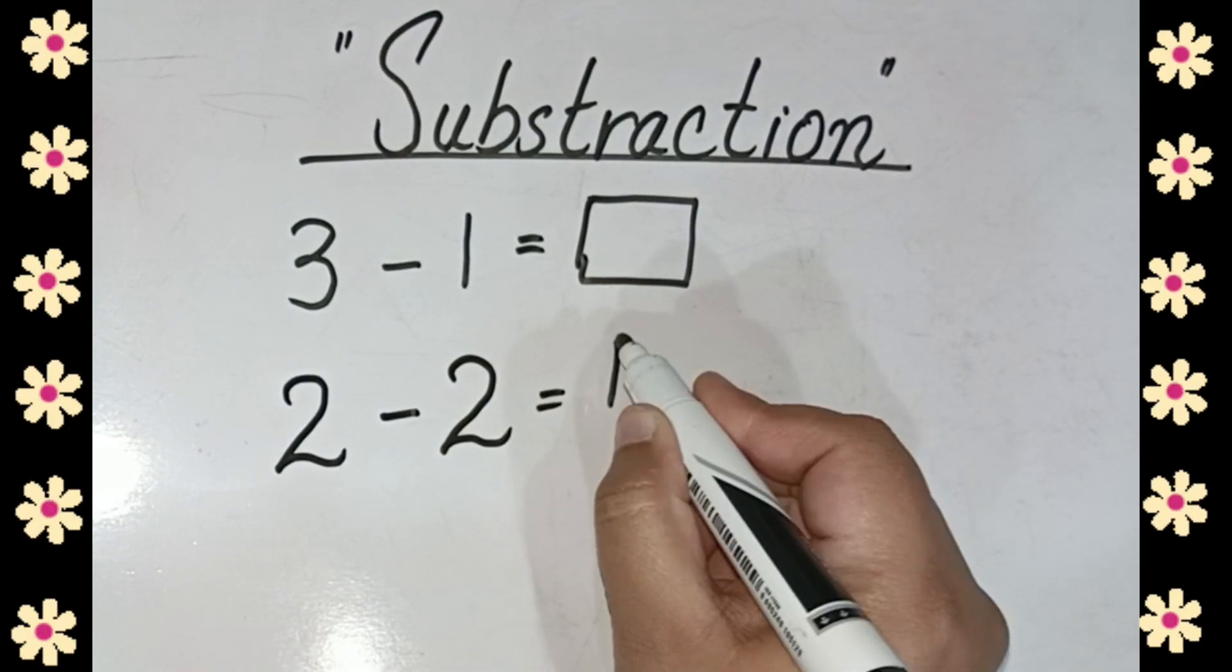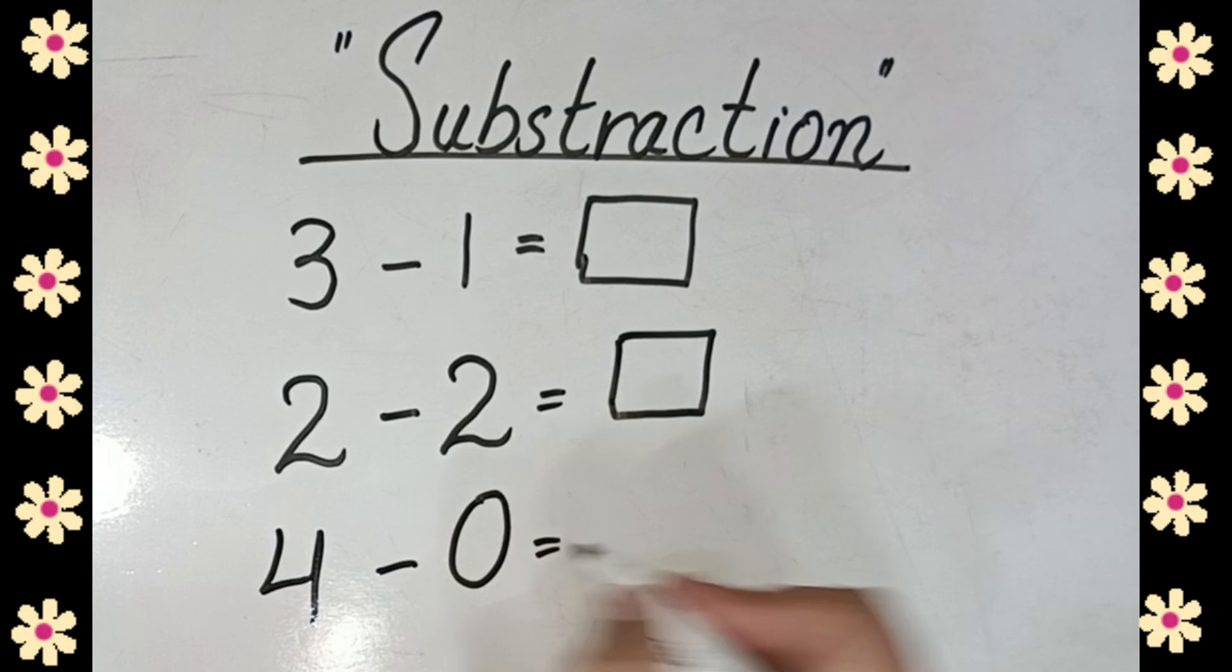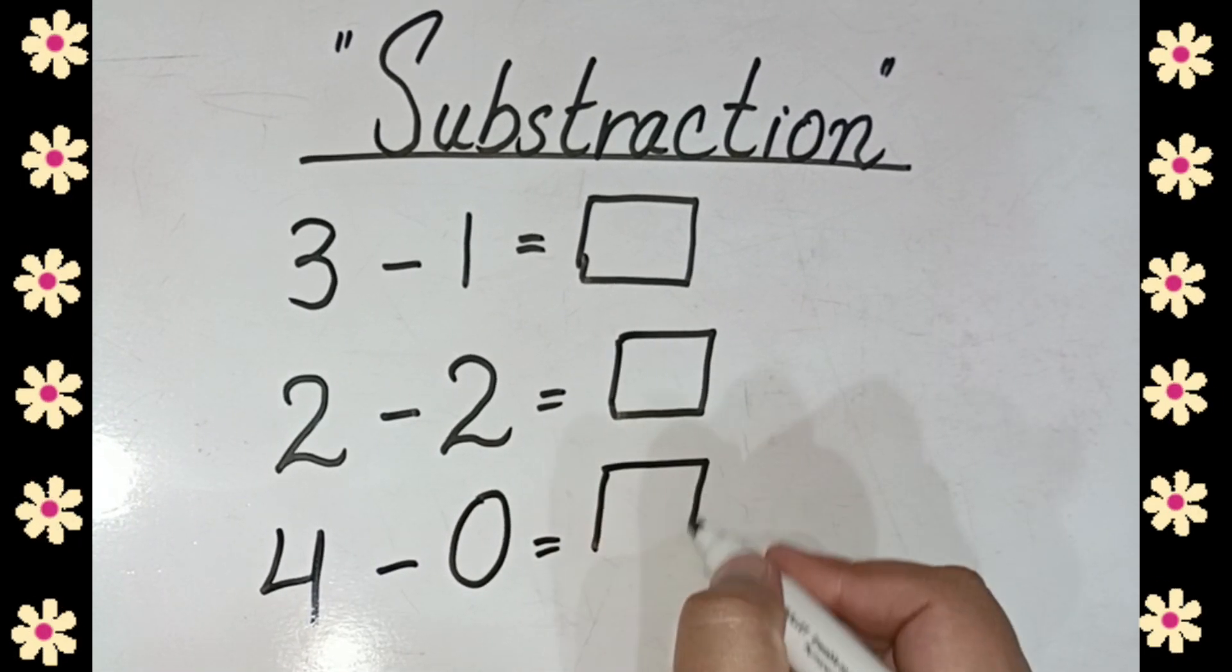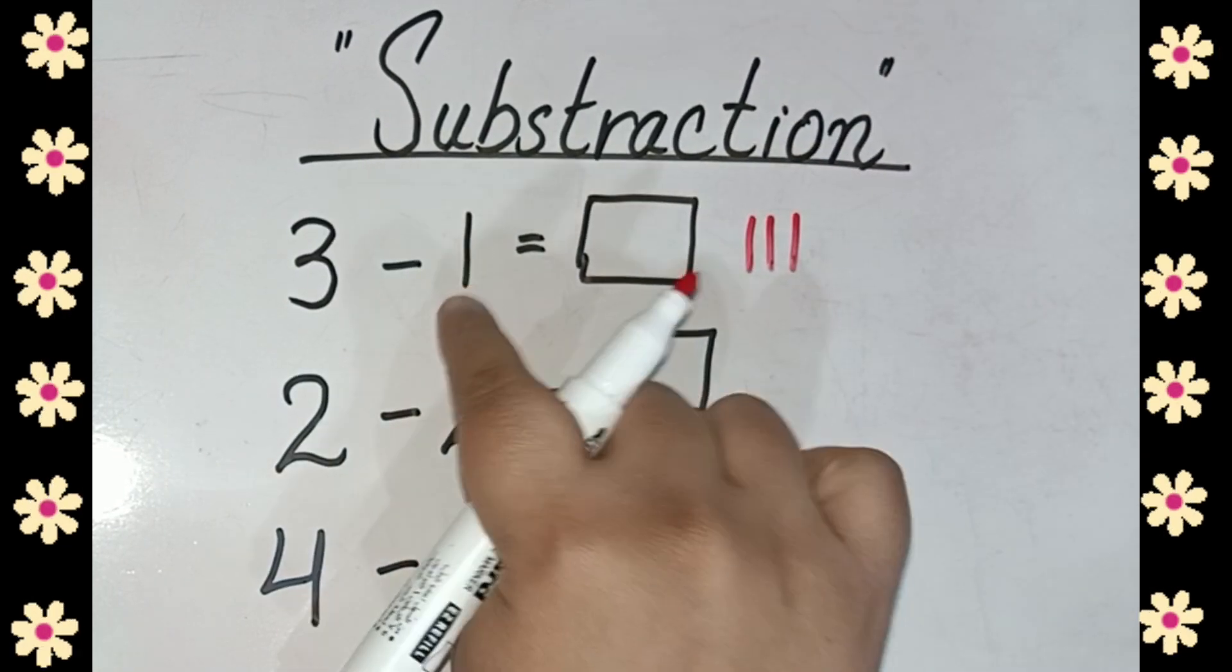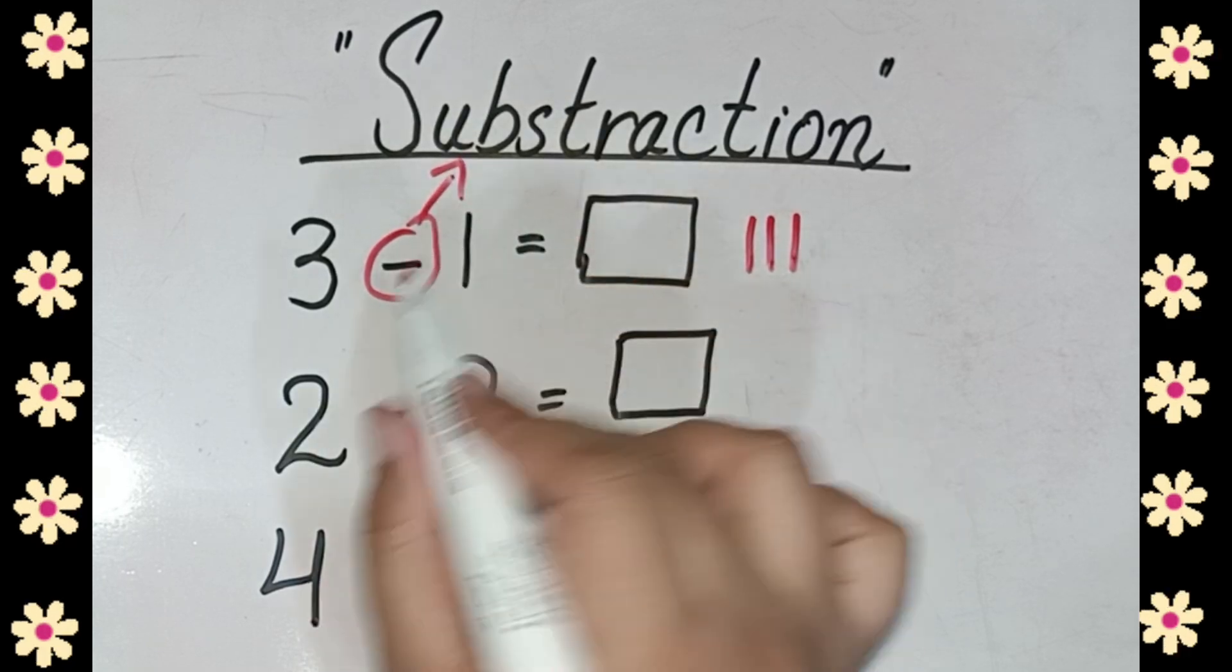2 minus 2 is equal to... no, it's a subtraction, wait a second, 4 minus 0, and you have to write the answer. So first of all tell me, 3 minus 1, this is subtraction or minus sign, okay.